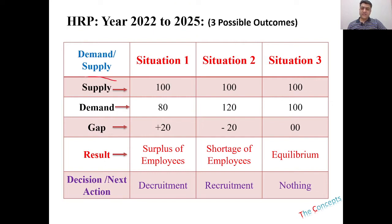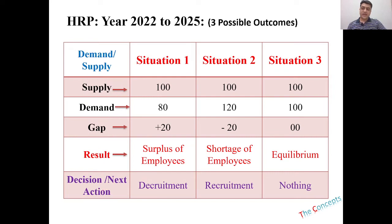In HRP, you will be calculating the supply of your employees, the demand of your employees, and based on that you will know the gap, which gives you results based on which you make decisions or the next action to take. Supply, in simple terms, can be considered as the number of employees you currently have — for example, 100 employees right now.